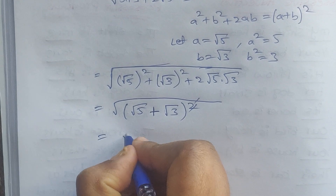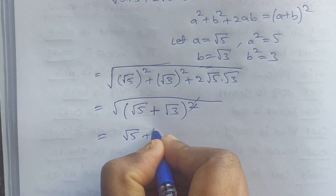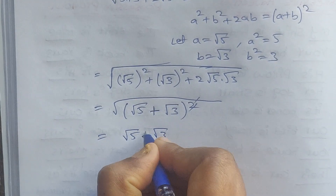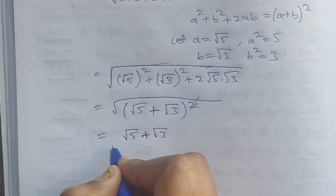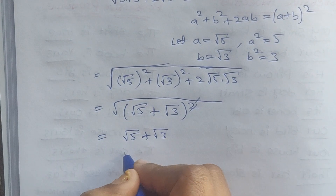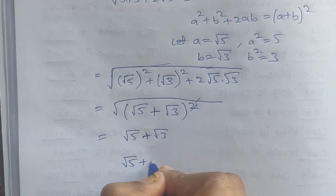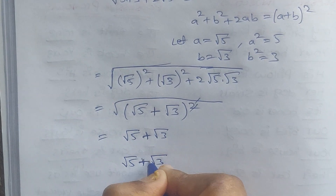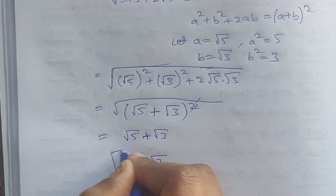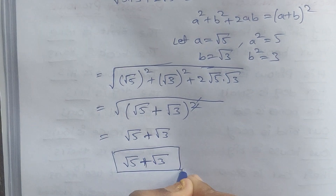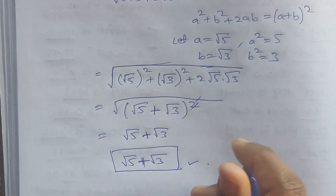The squares get cancelled, and the answer is equal to square root of 5 plus square root of 3. That is the answer. Thank you for watching.